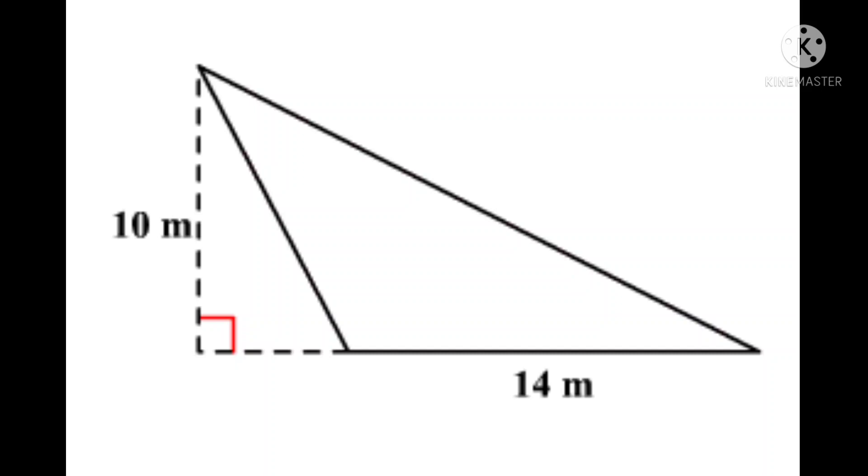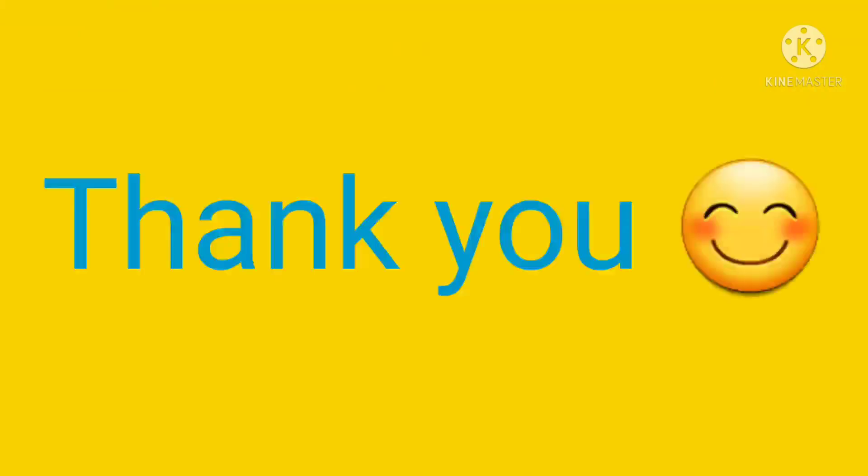Half multiplied by ten is five, so five multiplied by fourteen equals seventy. So guys, that's the answer to this question. Thank you!